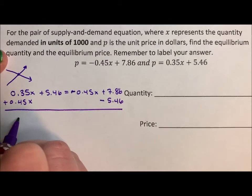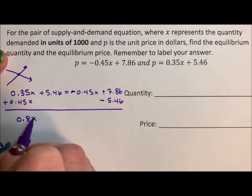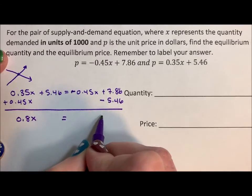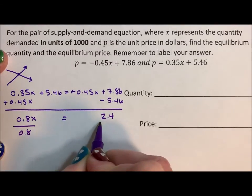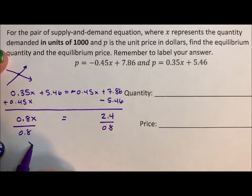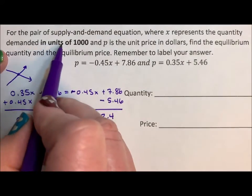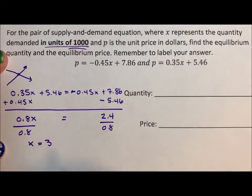And I'm going to get 0.8x is equal to 2.4 divided by 0.8. And I'm going to get x is equal to 3. Now notice it's in units of a thousand, but I'm not going to put that in yet because I want to double check to make sure I did all my math correctly.